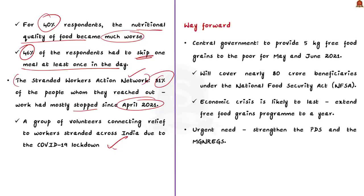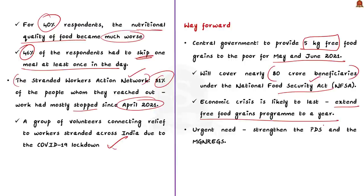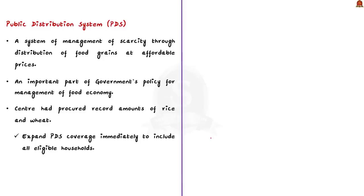According to the Stranded Workers Action Network — a group of volunteers connecting relief to workers stranded across India due to COVID-19 — 81% of those they reached said work had almost stopped since April 2021. So what is the way forward? The central government announced providing 5 kg of food grains free of cost to the poor for May and June 2021, covering nearly 80 crore beneficiaries under the National Food Security Act. As the economic crisis is likely to last long, it would be helpful to extend the free food grain program to a year. The public distribution system evolved as a system of managing scarcity through distribution of food grains at affordable prices.